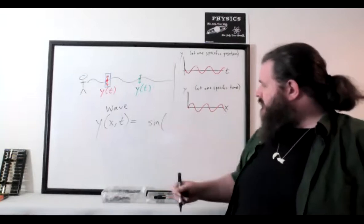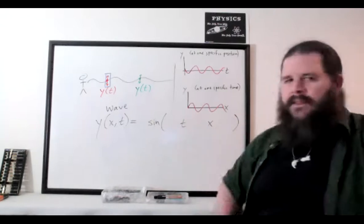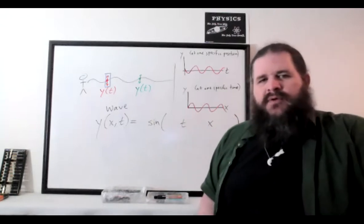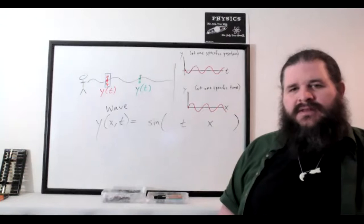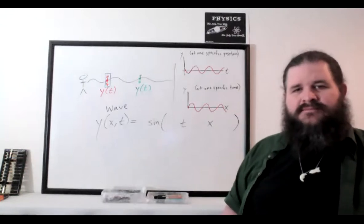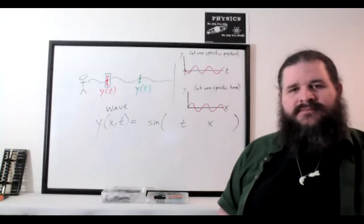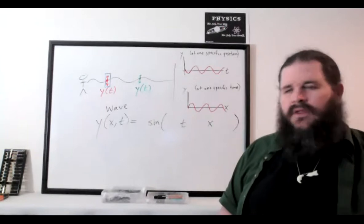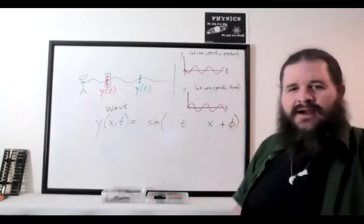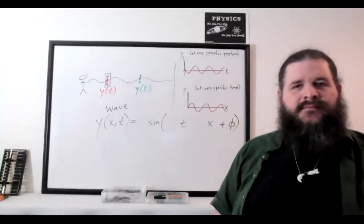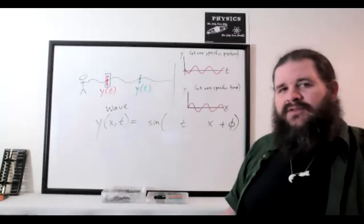So we want to make a sine function — it's going to have to involve t and x somehow. But we're going to need to make some modifications to make this the complete wave function. We need some sort of phase shift — a plus-some-constant term. We need that because we don't know where we are in the wave when we start. We don't really have a good starting point.